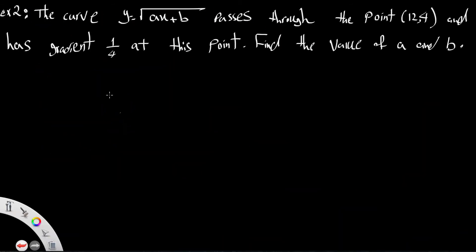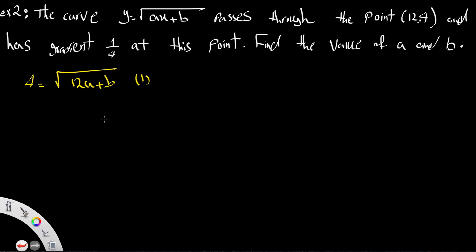Example 2: the curve y equals root(ax plus b) passes through the point (12, 4) and has gradient 1/4 at that point. Find the values of a and b. Since the point (12, 4) lies on the curve, substitute x equals 12 and y equals 4: 4 equals root(12a plus b). Label this equation 1.